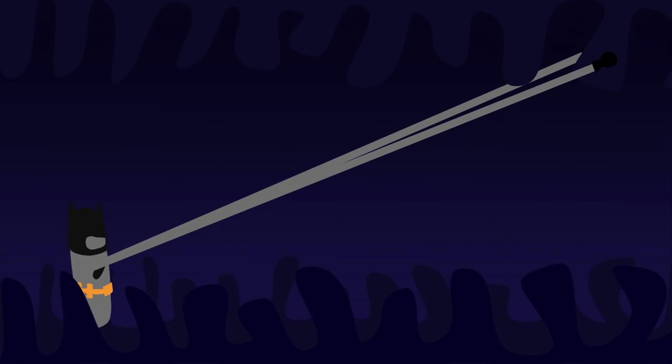Other strategies are even stranger. Some bacteria take Batman's approach. They use grappling hooks to pull themselves along. They can even use this grappling hook like a slingshot and fling themselves forward.